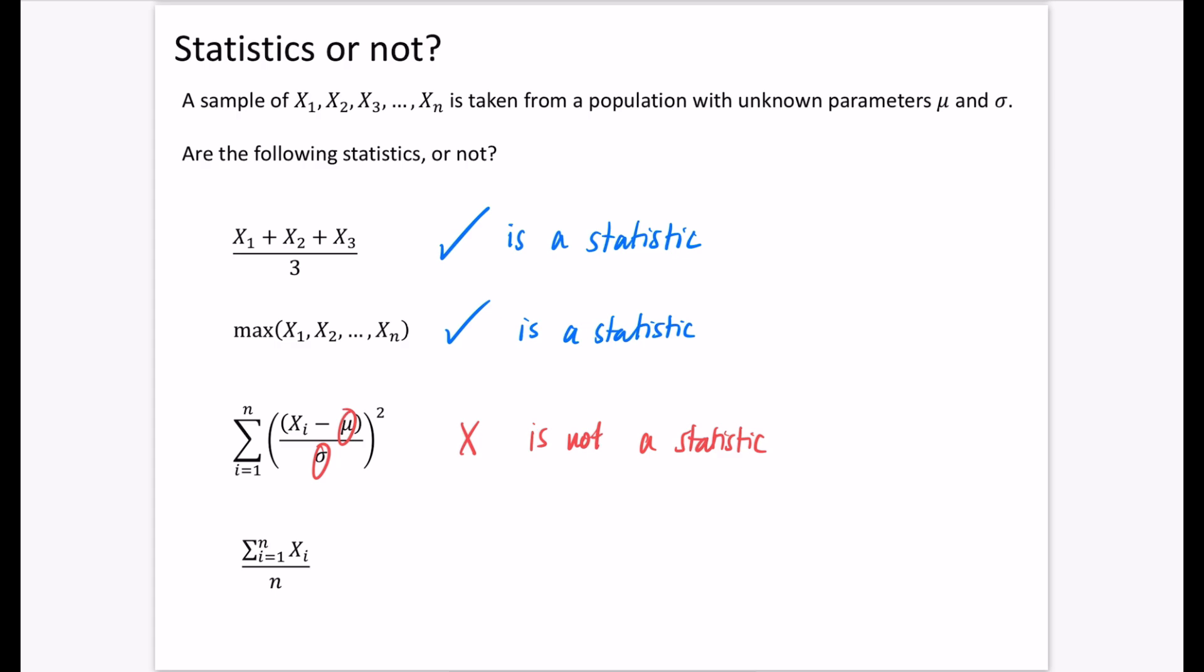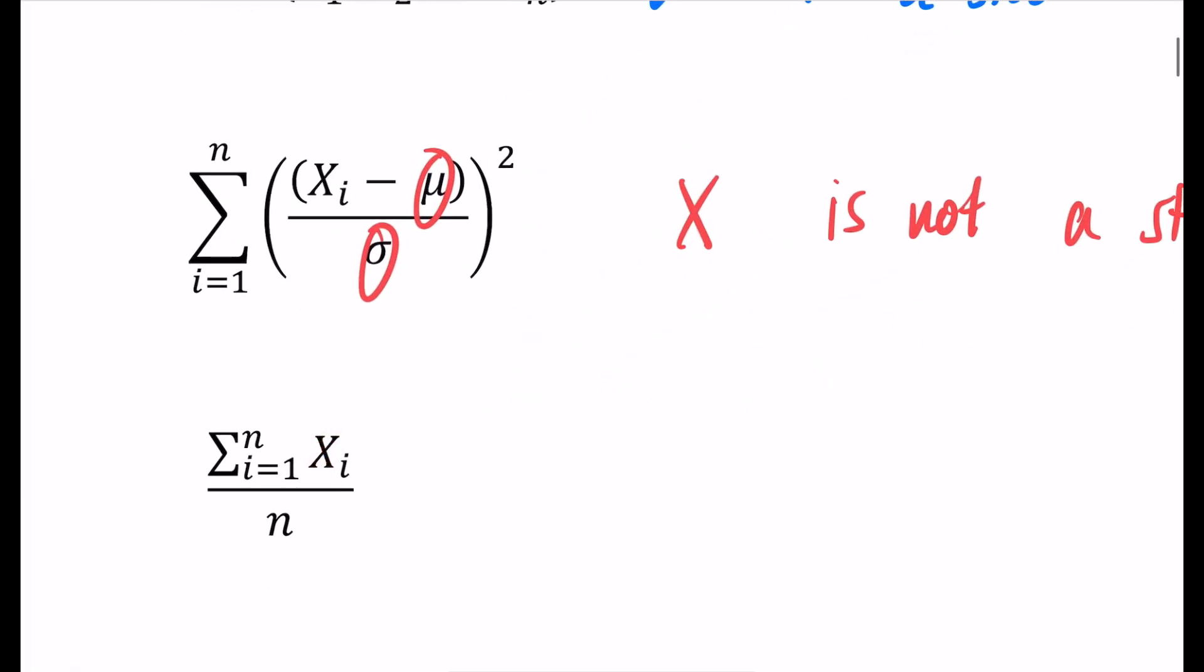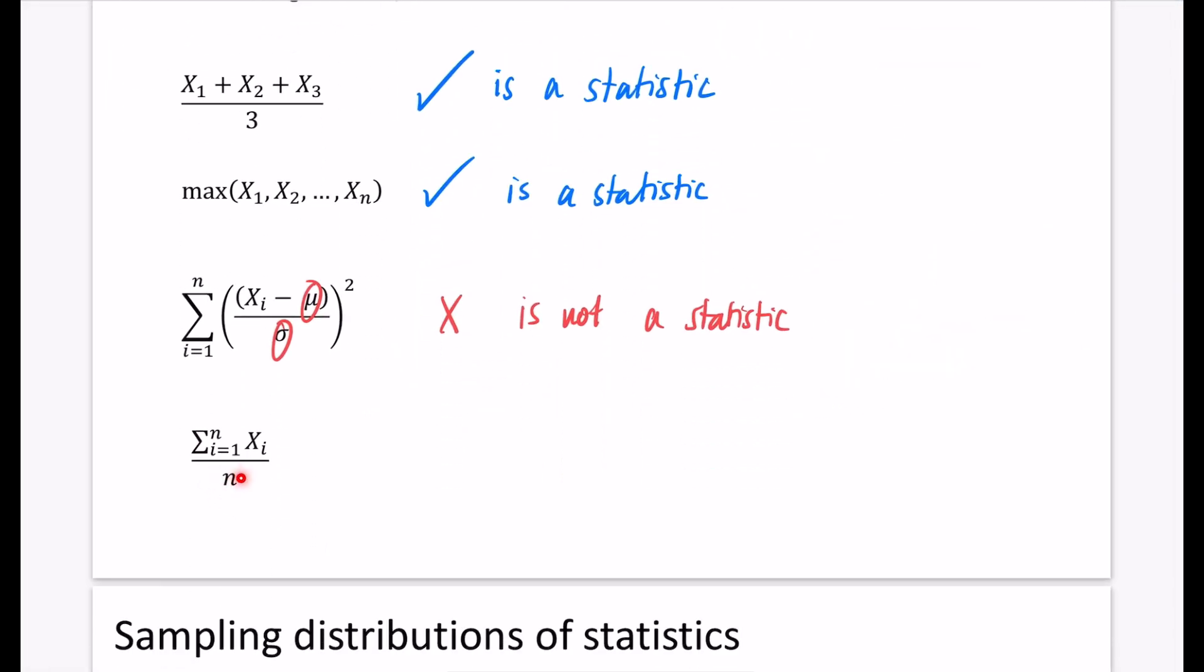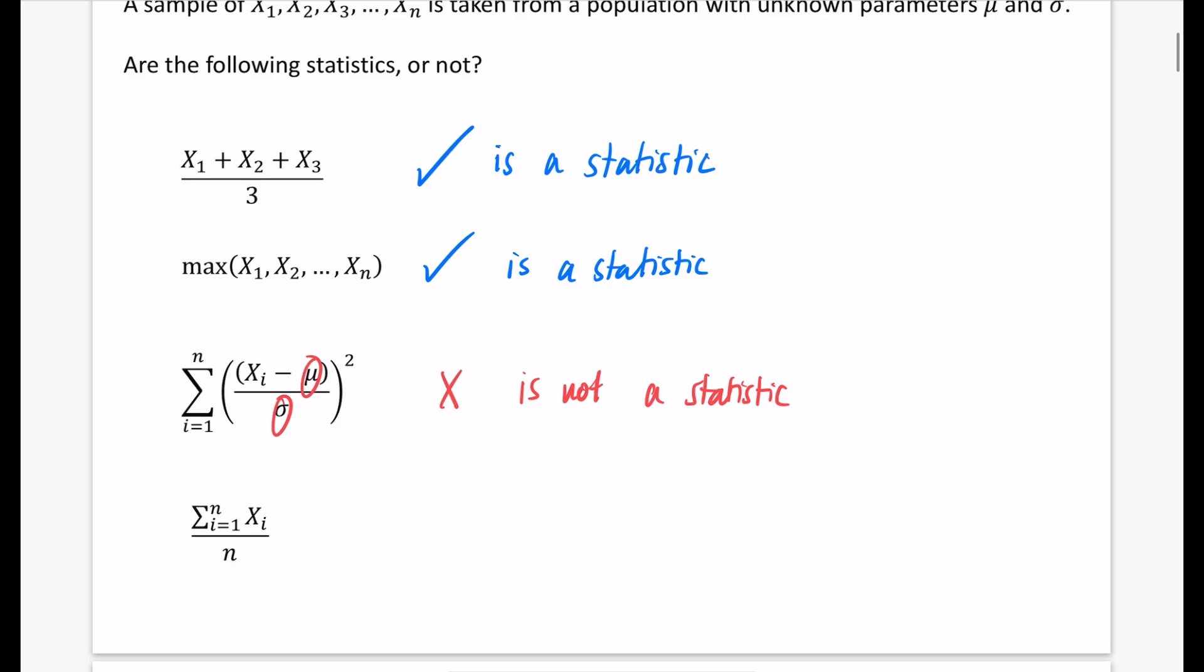This last one takes all the observations from 1 to n and sums them up, dividing by how many there are. n is not a population parameter, it's just how many things are in the sample. So this is a statistic - adding them all up and dividing by how many is the definition of the mean. This is X̄, capital X̄, not μ. μ is the population parameter. This is the statistic for the sample.